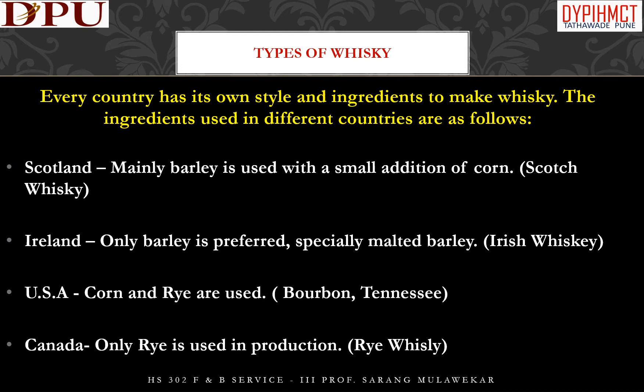Every country has its own style and combination of ingredients to make whiskey. In Scotland, mainly barley is used with a small addition of corn. In Ireland, only barley is preferred, specially malted barley. In the USA, corn and rye are used. In Canada, only rye is used in production. Let us go through every type of whiskey one by one.